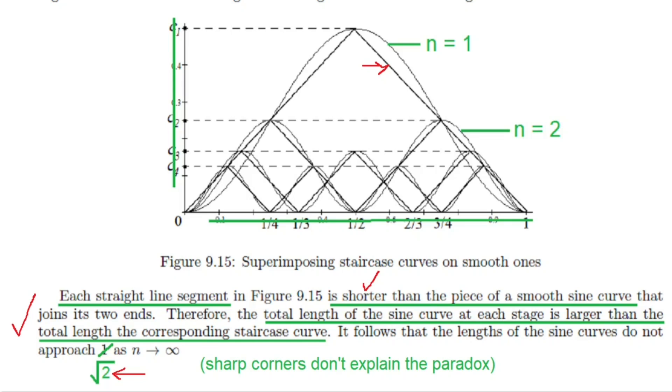We now end part one of this video. In part two, we analyze the staircase curve and uncover the quantitative reason for the length mismatch 2 versus square root of 2. We use that result to construct staircase-like paths whose lengths do converge to the length of the diagonal. Thanks for watching.